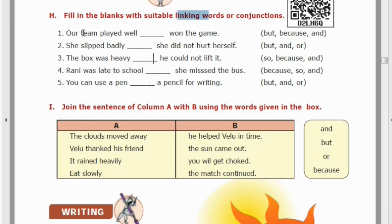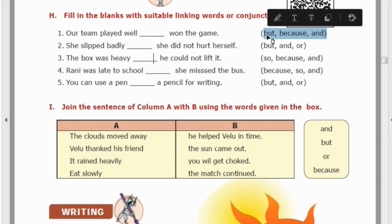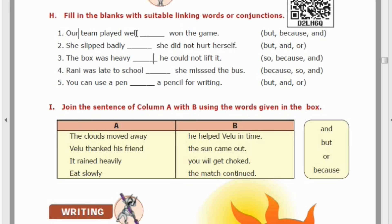First sentence in Exercise H: 'Our team played well ___ won the game.' Our team played well and they won the game. Because they played well and won, we cannot use 'but' here. So 'and' is suitable. Our team played well and won the game.